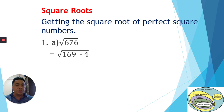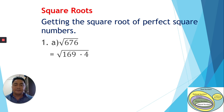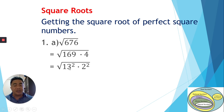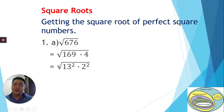We can cancel the radical sign with the power 2 because the value of the radical sign is one-half. If we multiply one-half by 2, that equals 1, so the number comes out of the radical sign. We write 169 as 13², and 4 as 2². Since both terms now have power 2, we can move them out of the radical sign.